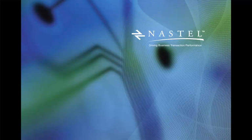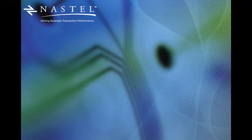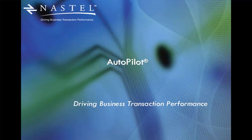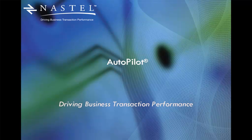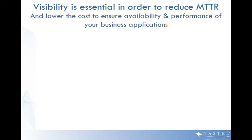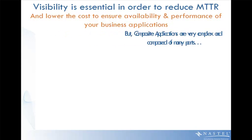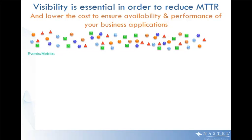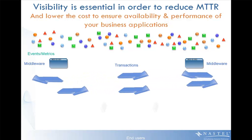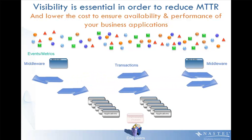Welcome to the video on NASTEL Technologies Autopilot. We'll be focusing on driving business transaction performance. Visibility is key here in order to reduce the mean time to repair, but it's pretty hard to do because of the complexity and so many moving parts. It includes events and metrics, middleware messages, highly volatile transactions, and the applications that invoke all of these.